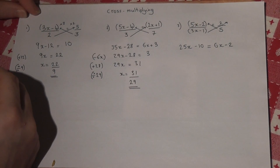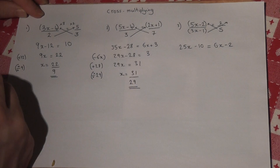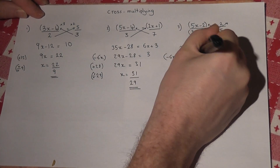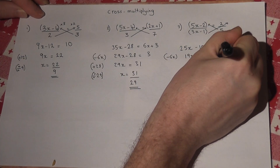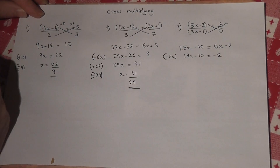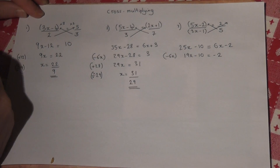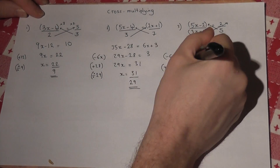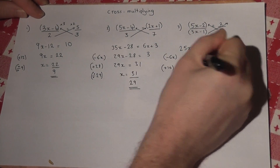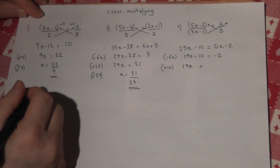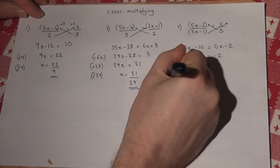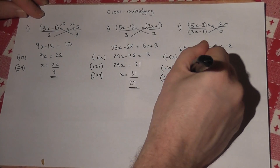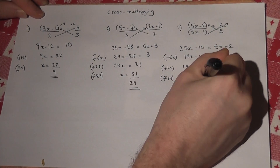We solve the equation using our normal techniques. I'll take away 6x first, leaving it as minus 2 — be very careful there. And then add 10. So 19x equals minus 2 plus 10, which is 8. Then divide by 19, so x will equal 8 over 19.